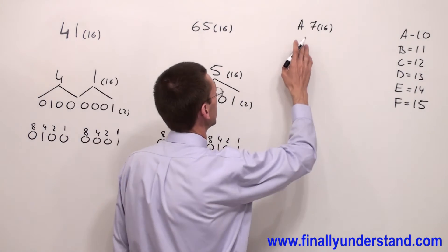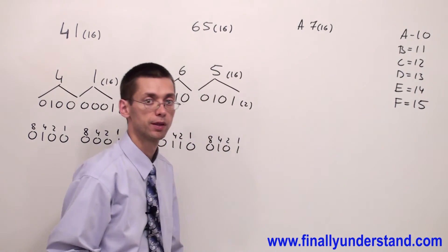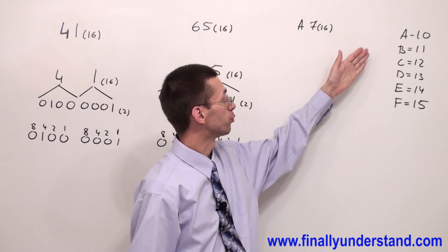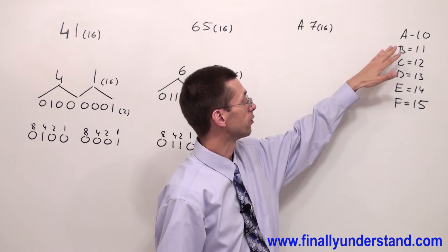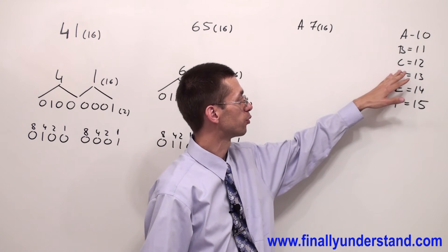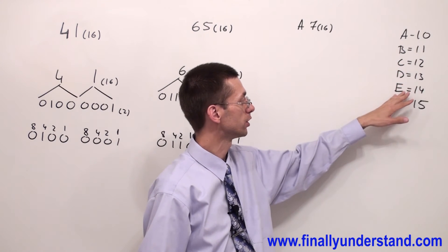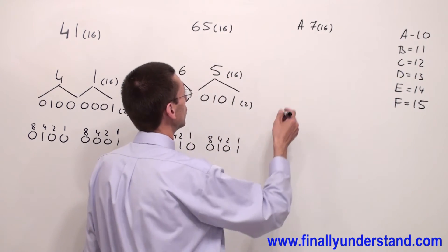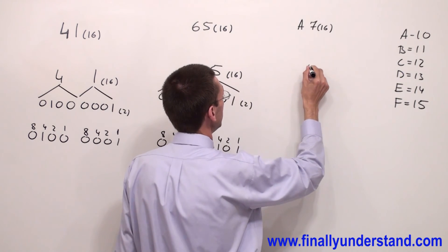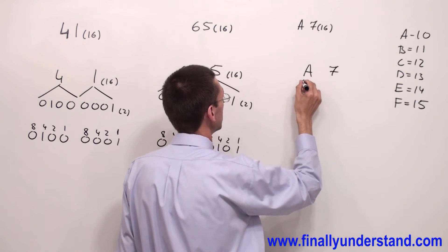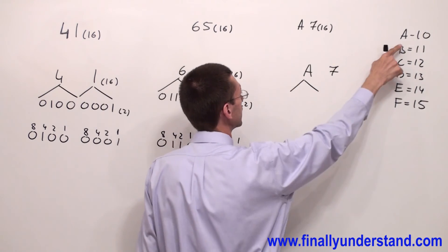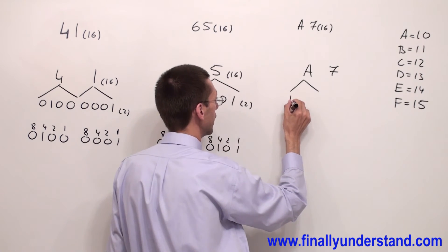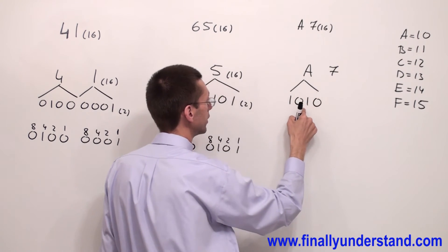Let's take a look at A7₁₆. Anytime we have alphabetic characters, keep in mind that A represents 10, B represents 11, C represents 12, D represents 13, E is 14, and F is 15. So A represents 10, which is why A in binary is 1010.